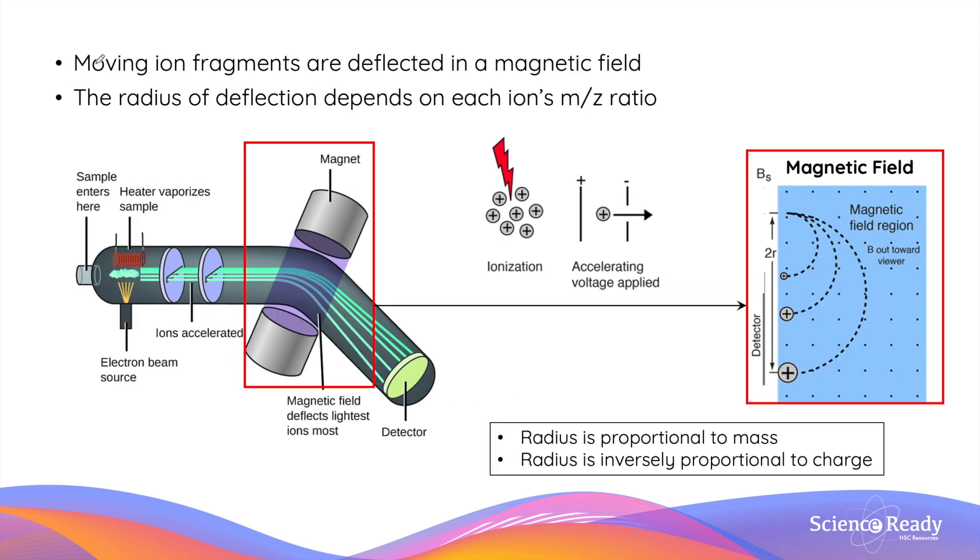The ion fragments then enter a magnetic field in which they are deflected, shown by the curved path in this diagram. Now, the radius of deflection of each of the ions depends on the ion's mass-to-charge ratio. Remember that in the very first step of ionization, we produced molecules of different sizes. And because they have different sizes, when they enter the magnetic field, the radius of deflection of the curved path will be different, such that the radius of curvature is proportional to the mass of the ion, but inversely proportional to the charge.